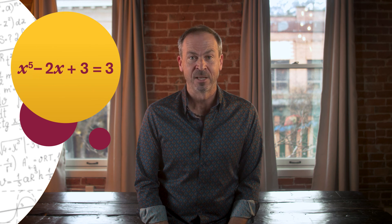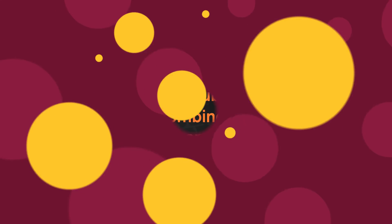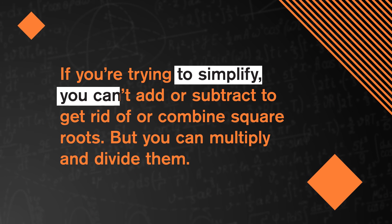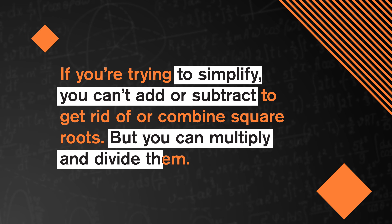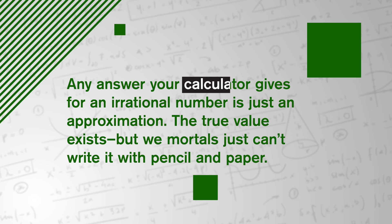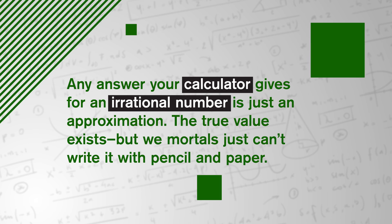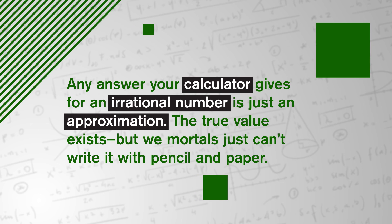So now we know there's a whole category of numbers beyond the integers and the fractions. This idea does feel irrational and mysterious, but we've just proved it. And now we can solve all sorts of equations that were closed to us before, like x squared equals 2, or x to the fifth minus 2x plus 3 equals 3. And that's what algebra does. It keeps opening up the possibilities of what we can describe in the language of math. Now, when working with roots, don't let them hold you back. If you're trying to simplify, remember you can't add or subtract to get rid of them or combine square roots, but you can multiply and divide them. Remember that any answer your calculator gives for an irrational number is just an approximation. The true value exists, but we mortals just can't write it down with pencil and paper.